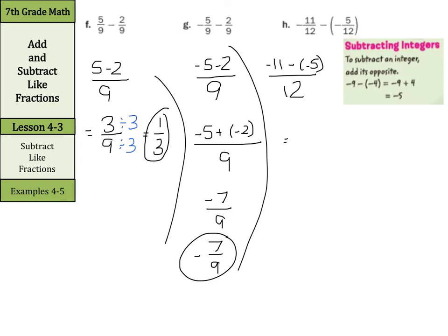We're going to keep the negative 11, change our subtraction to addition. And the opposite of negative 5 is a positive 5. And negative 11 plus 5 is negative 6 over 12. Now this fraction I can also simplify by dividing by 6 on top and bottom. And my resulting fraction here is negative 1 over 2, or simply negative 1 half.